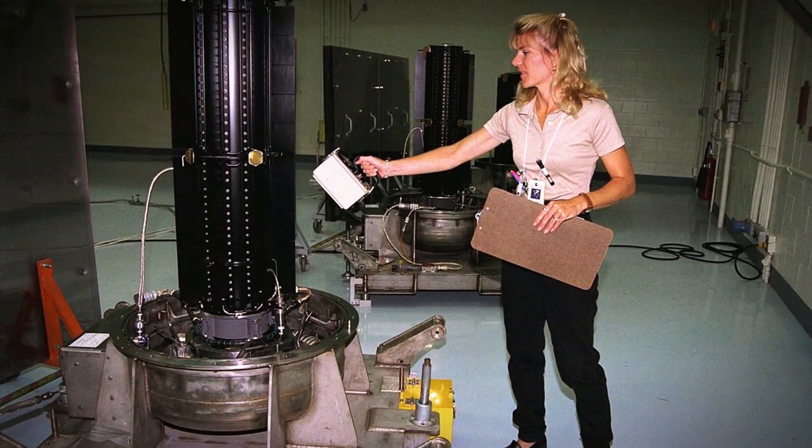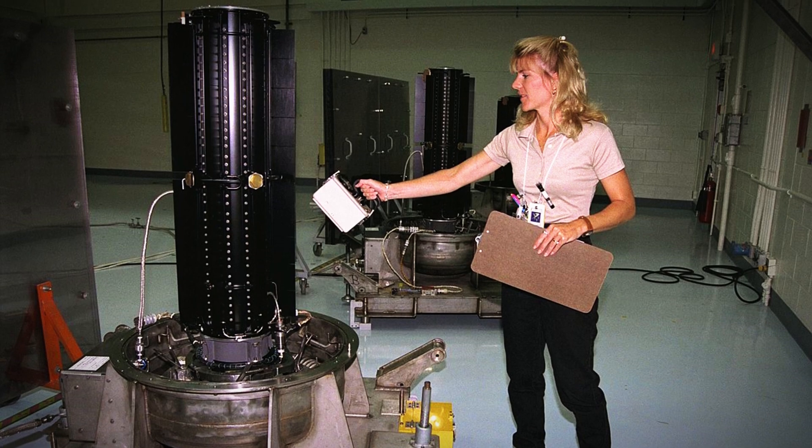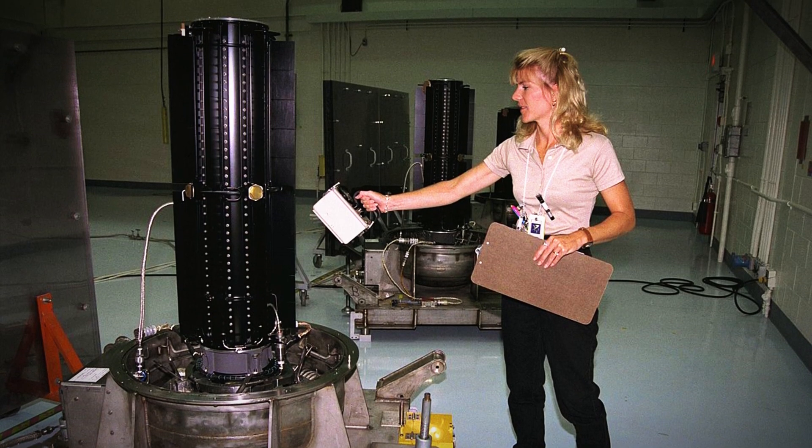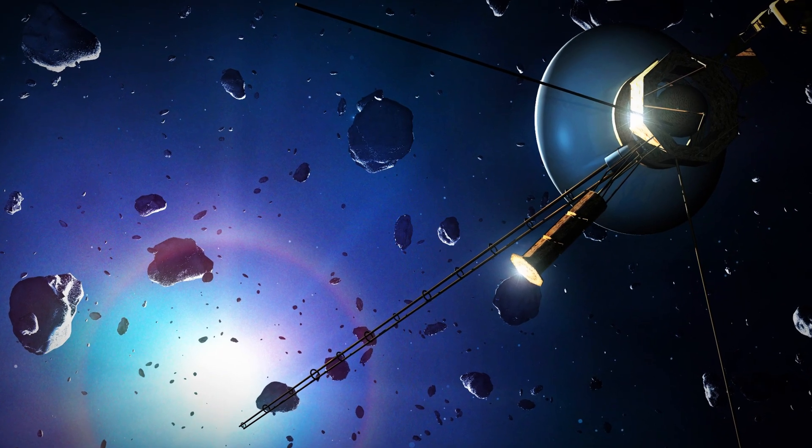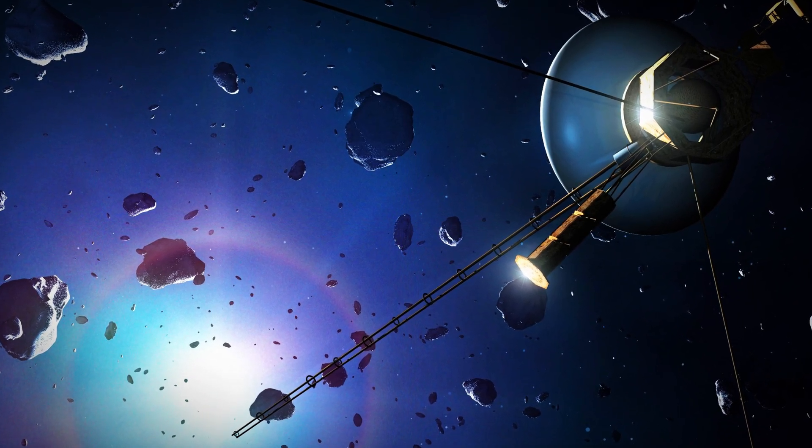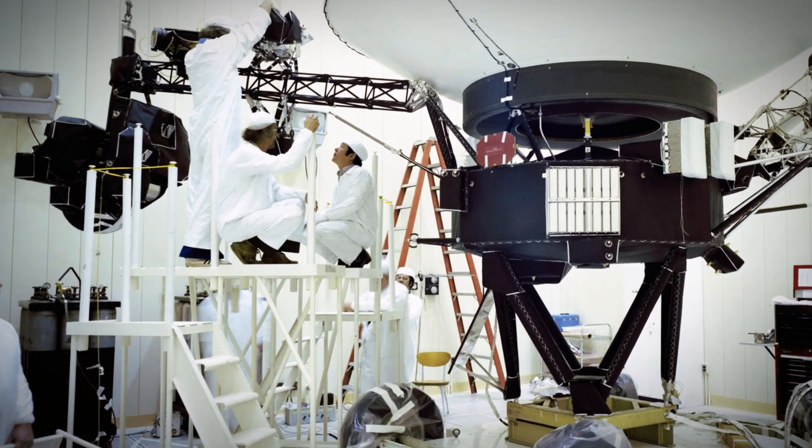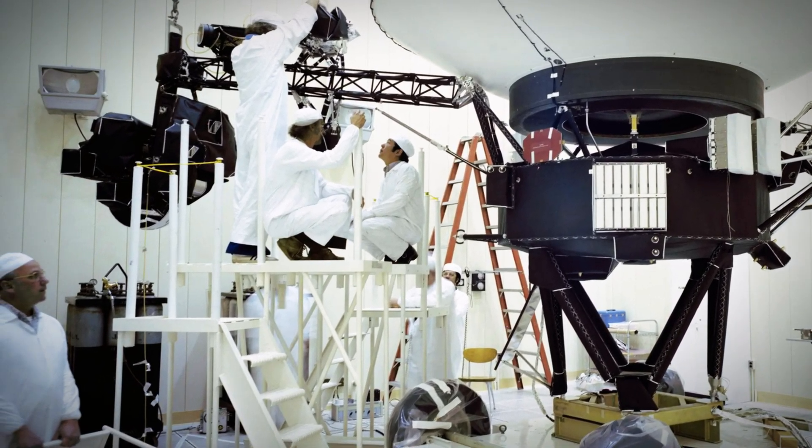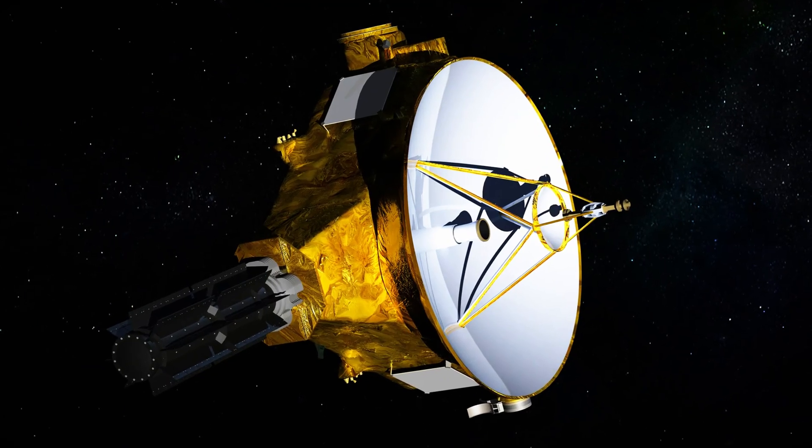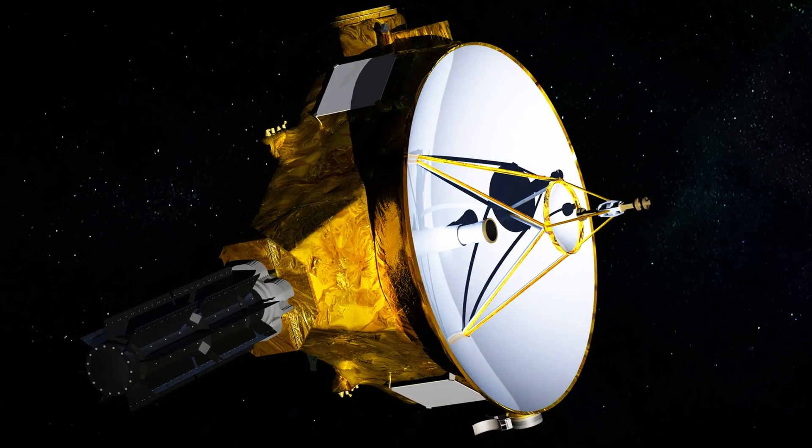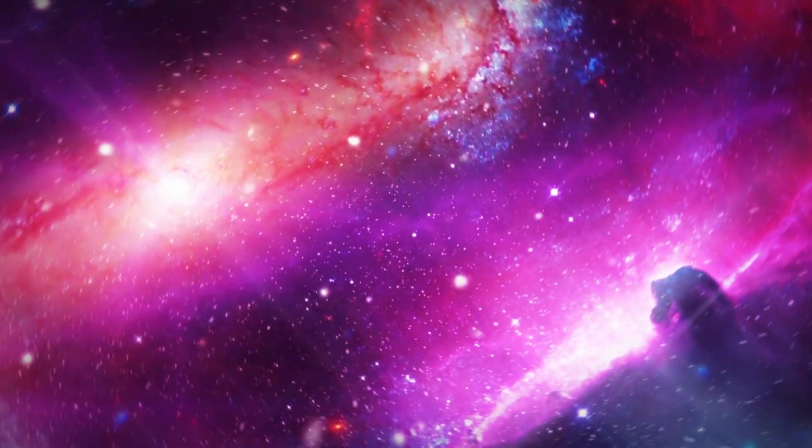Fueled by plutonium-powered generators, these pioneering probes have journeyed through the relentless passage of time. This presents a unique challenge, as the gradual decay of plutonium leads to a steady decline in energy output. To conserve power, NASA engineers have systematically shut down non-essential systems over time. Instrument heaters, once deemed necessary, were later considered expendable, despite their role in protecting equipment from the extreme cold of space.